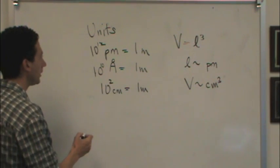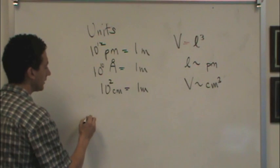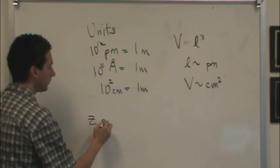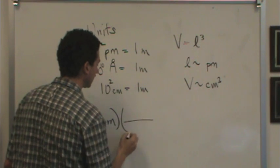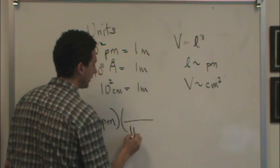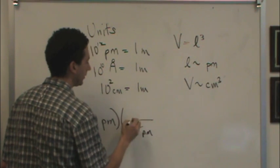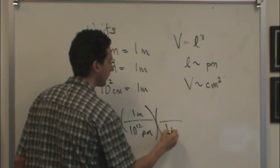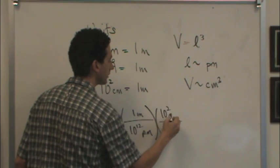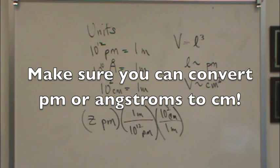So we'll often have to do this conversion. Just make sure that if you're given Z amount of picometers, you'll need to convert first from picometers to meters, and then from meters to centimeters. Then you'll have centimeters, and that's something you can cube to find volume.